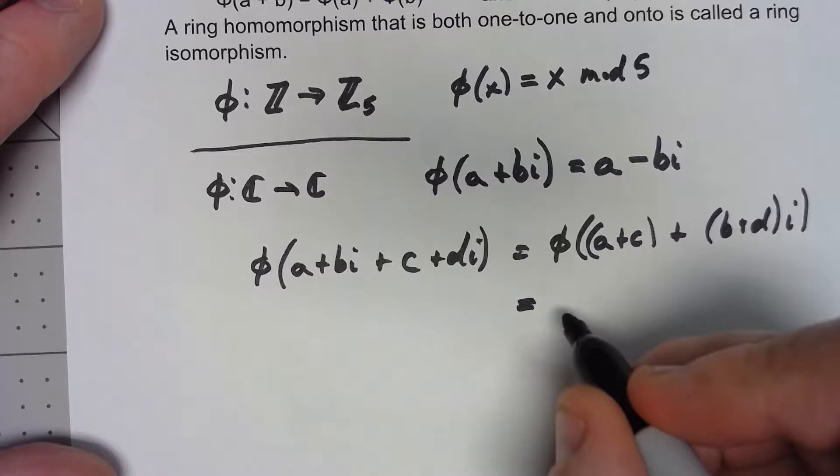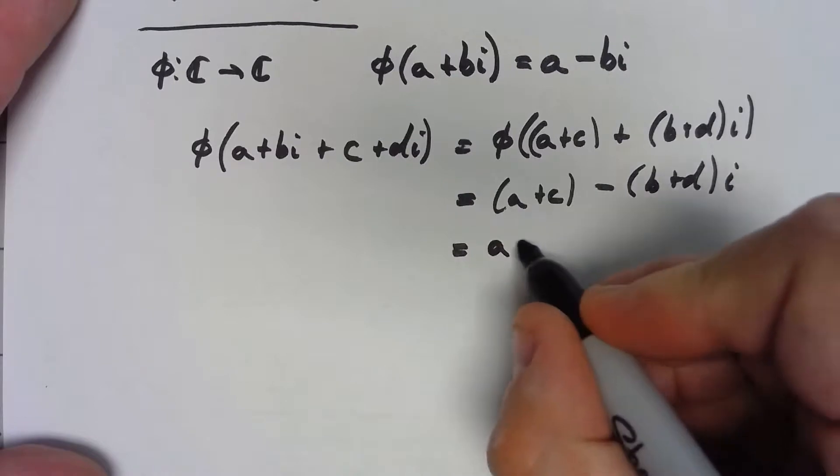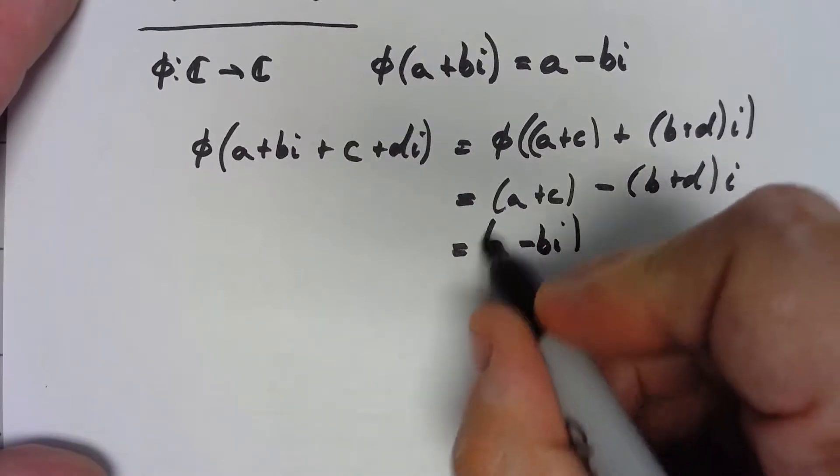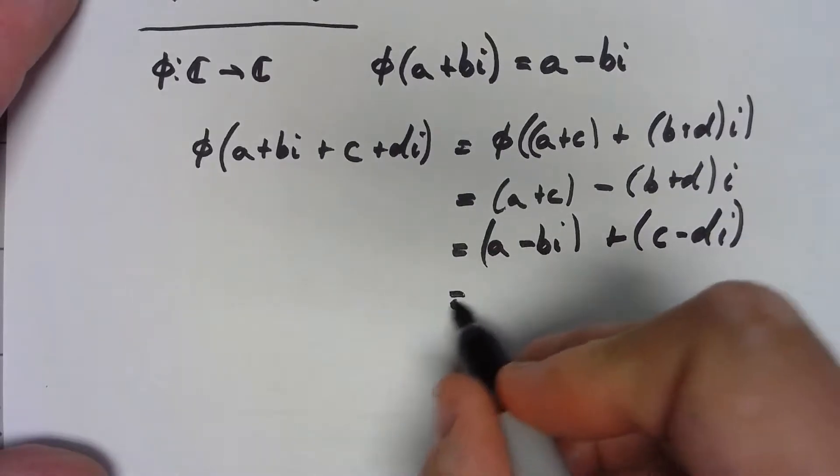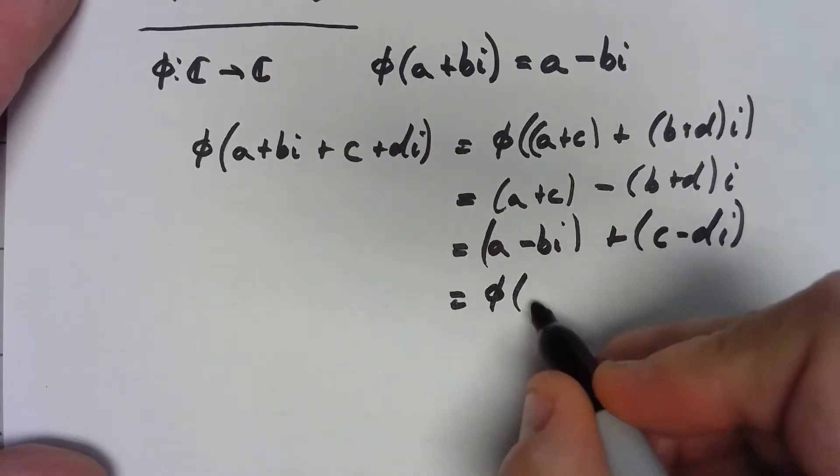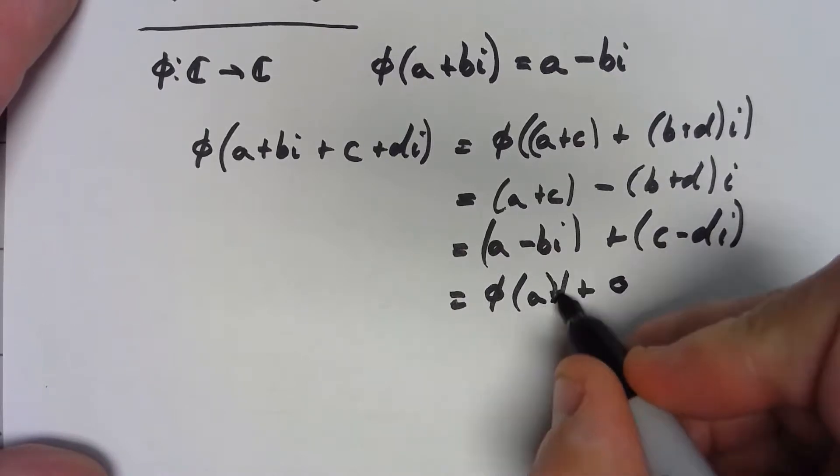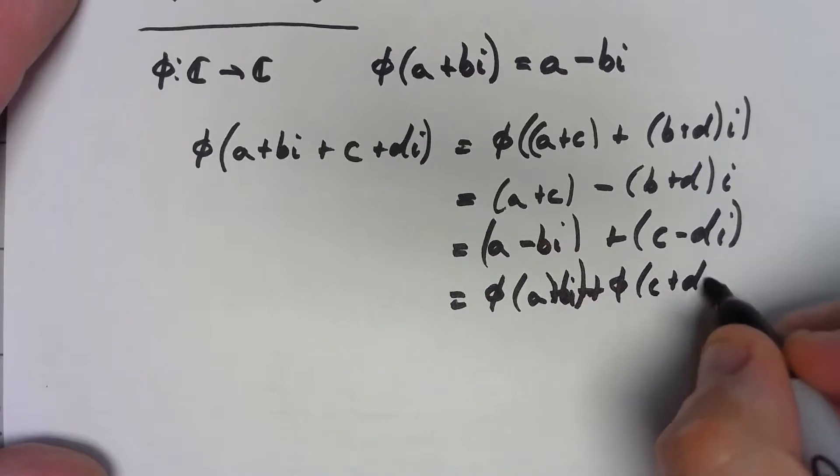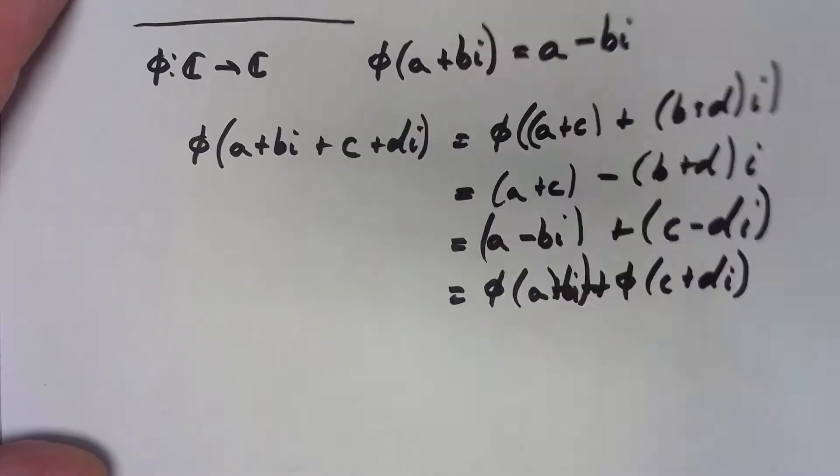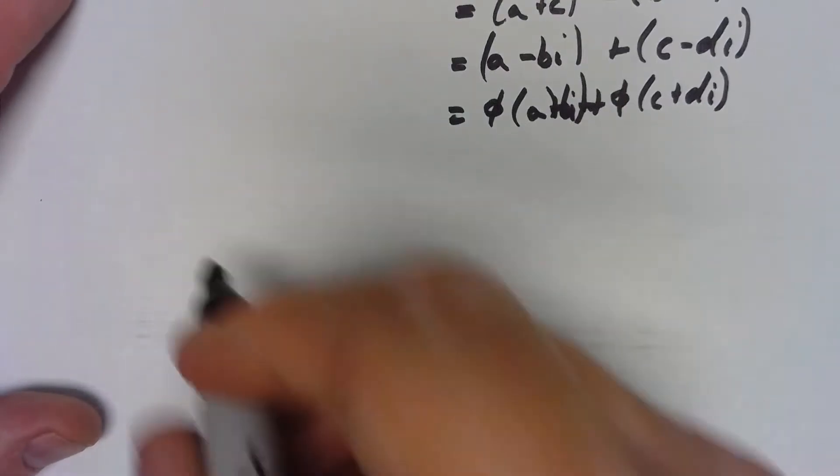Doing just a little bit of algebra: (a - bi) + (c - di), which is of course φ(a + bi) + φ(c + di).